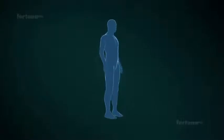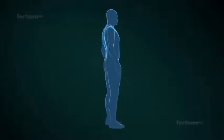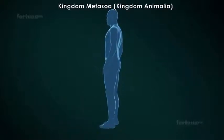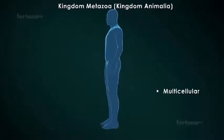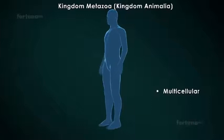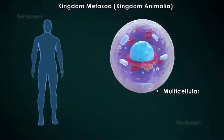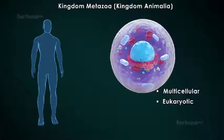Finally, we reach the kingdom with the most complex organisms: Kingdom Metazoa, or Kingdom Animalia. It includes animals, which are multicellular organisms. The cells of these organisms will be eukaryotic, and although they do not have a cell wall, they do have a cell membrane.